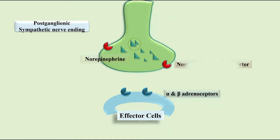At presynaptic sites, we have the norepinephrine transporter. The function of this norepinephrine transporter is to remove norepinephrine from the synaptic cleft. Norepinephrine releases and activates alpha and beta receptors to produce its effects.